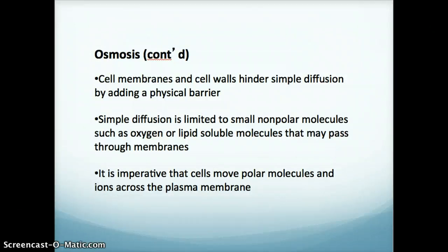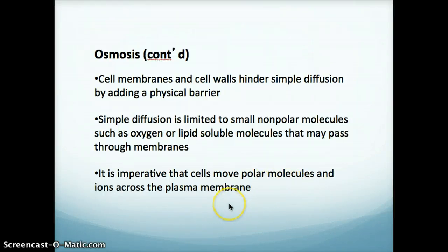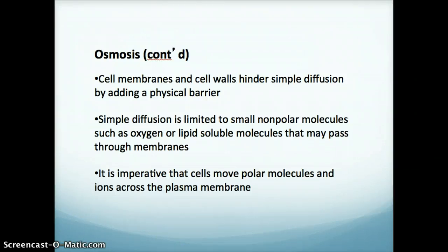Cell membranes and cell walls can hinder diffusion by acting as a physical barrier. Generally water can pass through, but large polar molecules and ions have a difficult time crossing the plasma membrane — they get stuck on either the inside or outside of the cell. So if a cell has nutrients it wants to bring in, how does it do that?